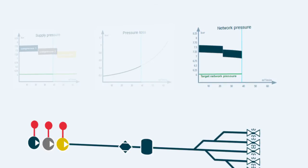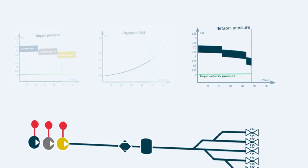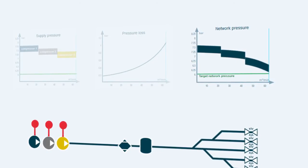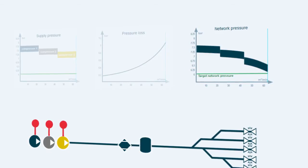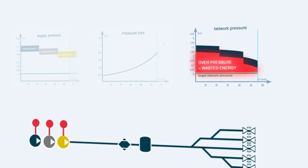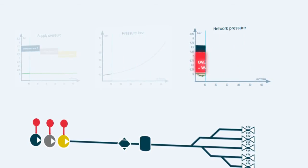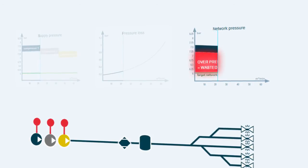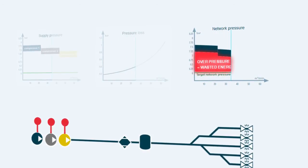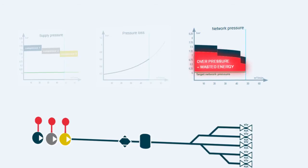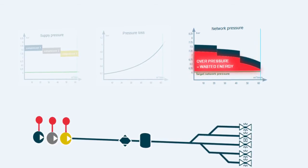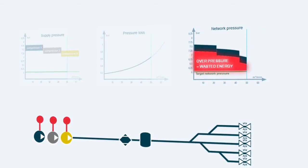The pressure settings of the compressors should be high enough to secure the minimum pressure level at maximum consumption. The outcome is that an unnecessarily high pressure level practically always exists in the system. Production plants are accustomed to maintaining a high pressure level to avoid problems in production. An unnecessarily high pressure level is a waste of energy.